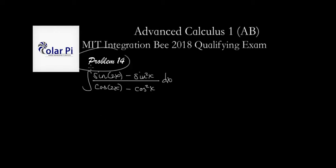Hey guys, problem 14 here. This is actually a pretty straightforward integral, even though it looks somewhat difficult. Remember the sine double angle identity, which is sine 2x equals 2 sine x times cosine x.